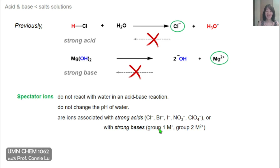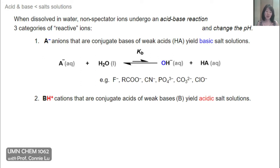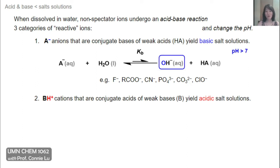Now let's talk about the ions that are reactive in water and can undergo acid-base chemistry, thereby changing the pH of the water solution. The first category is the A- anions, which represent the conjugate bases of weak acids, HA. If we start with a conjugate base in water, it can undergo a Kb reaction to form hydroxide and some of its conjugate acid. Examples include fluoride anion, the conjugate base of HF, which is a weak acid. These solutions are basic because they form hydroxide, and the pH will be greater than 7.